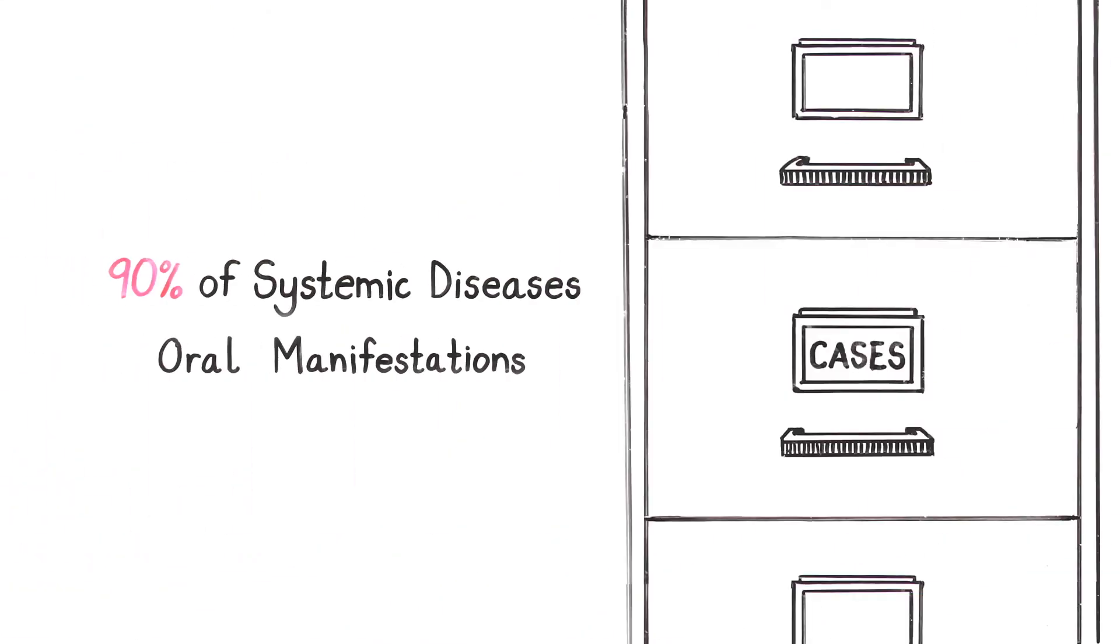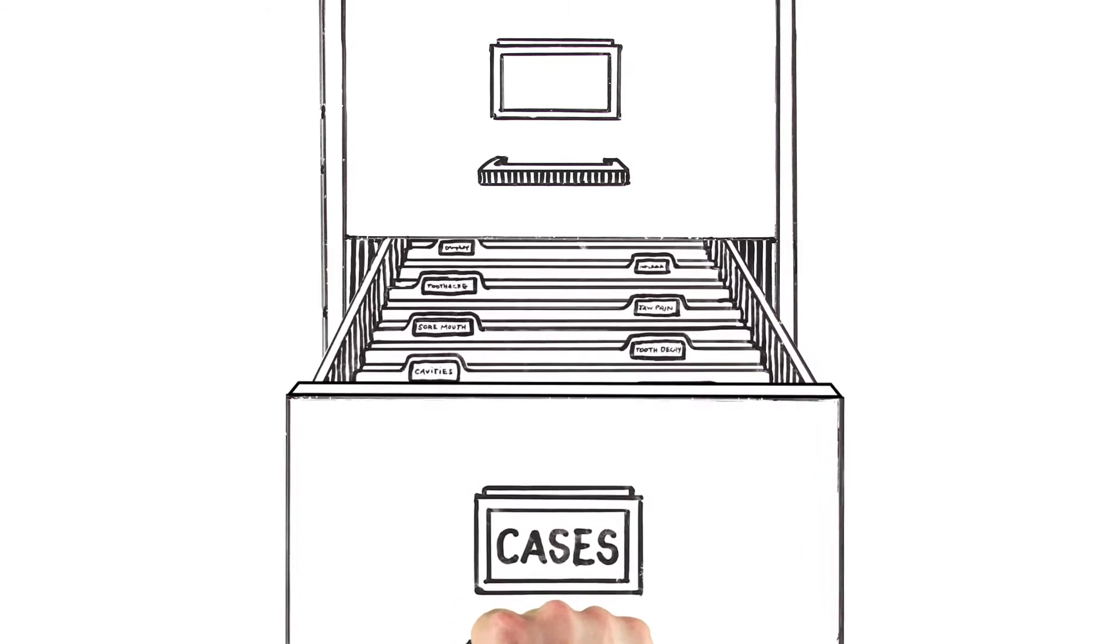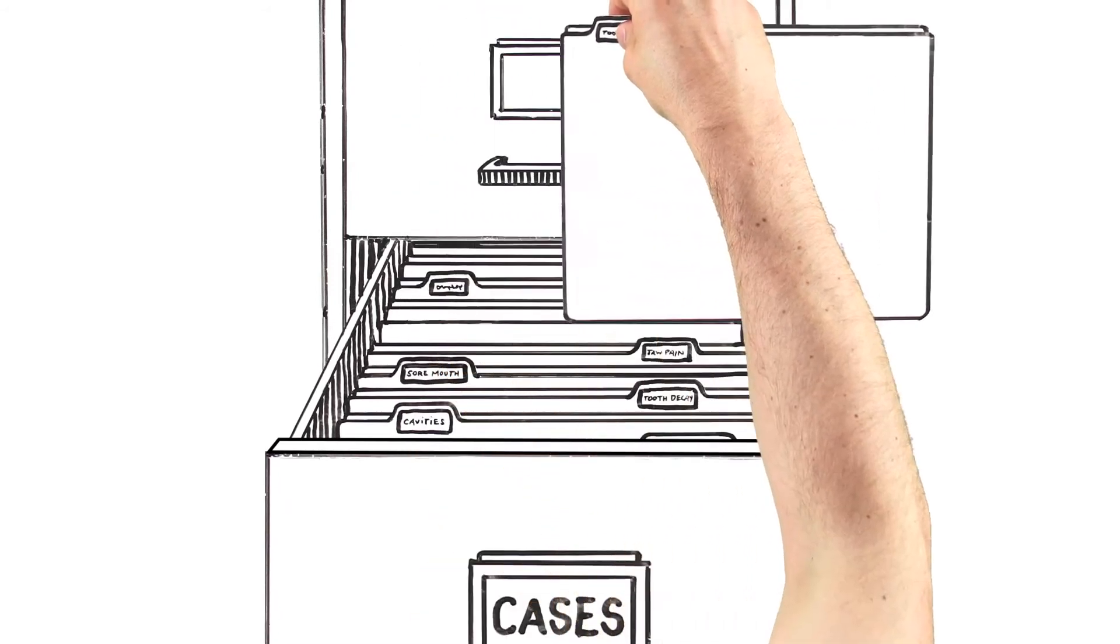More than 90% of systemic diseases, including heart disease, have oral manifestations. That means if something is wrong in your mouth, it's possible something could be wrong elsewhere, too.